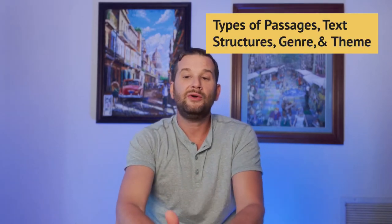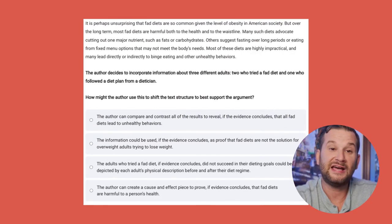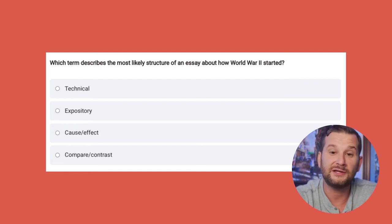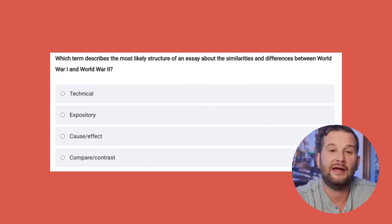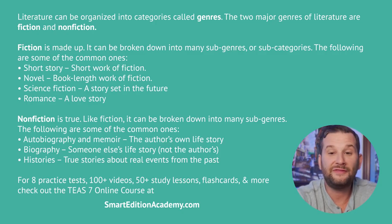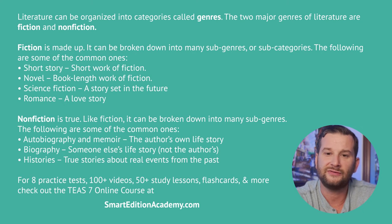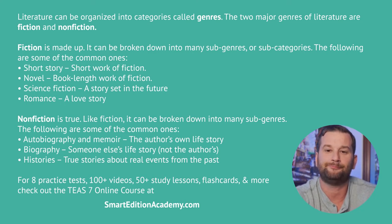Types of passages, text structures, and genre and theme are important topics. The passage types are narrative, expository, technical, and persuasive. For text structure, you need to know sequences, comparing and contrasting, cause and effect, problem and solution, and descriptive text. For genre and theme, fiction includes stories, novels, romance, and mystery, while nonfiction includes autobiographies, essays, criticism, and reviews.